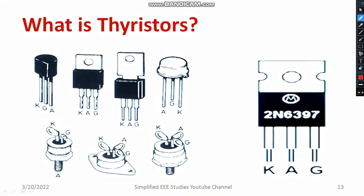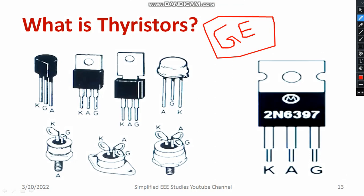You can see the Thyristor in this fashion. There are different companies providing Thyristor; however, General Electric Company introduced Thyristor first and coined the name. There are different varieties of Thyristors available — you can download the datasheet for more information. For example, 2N6397 is one such Thyristor. You can identify the different terminals: K stands for cathode, G stands for gate, and A for anode. Once you get a particular Thyristor, identifying the legs will be helpful for making connections.